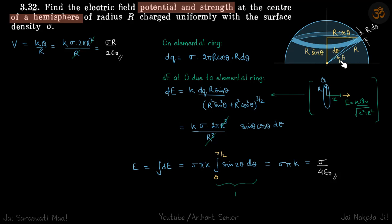This ring has angle theta from the horizontal. If this is theta, the thickness of this ring is R dθ, and the distance of the ring from the center is R sin θ. The radius of the ring is R cos θ.